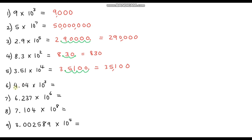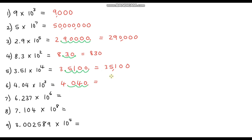Question six: 4.04 times 10 cubed. So we have 4.04. Let's add some placeholder zeros — they help when moving the decimal point. We move it three places to the right — one, two, three. The decimal point is now here; we get rid of the unused zero. Our final answer is four thousand and forty.